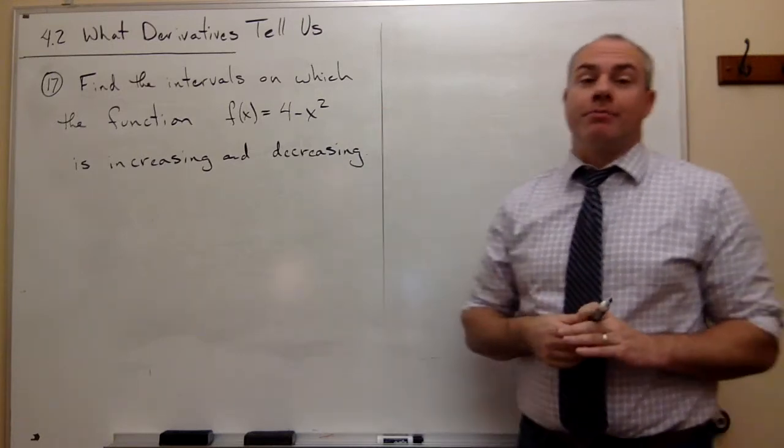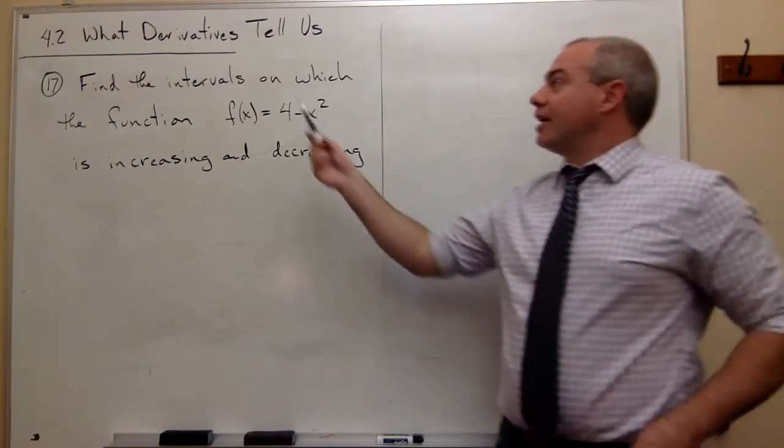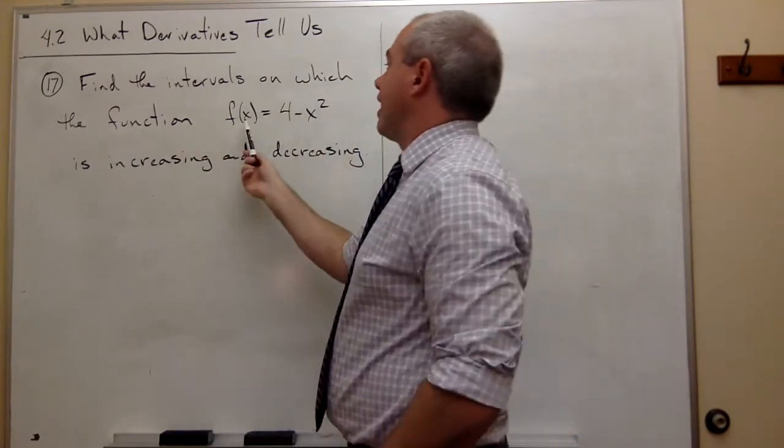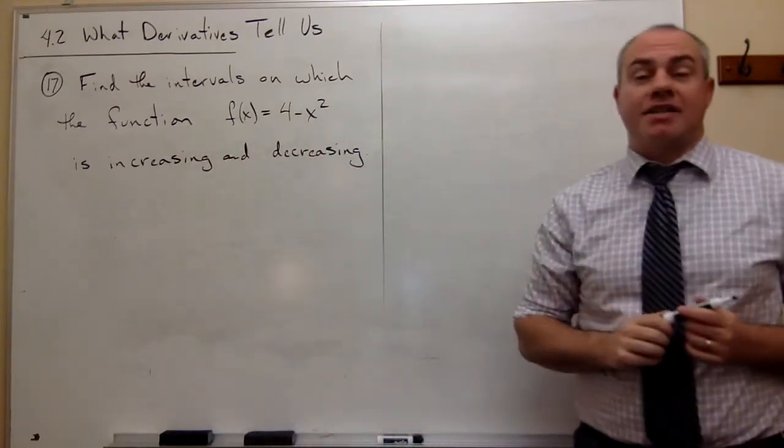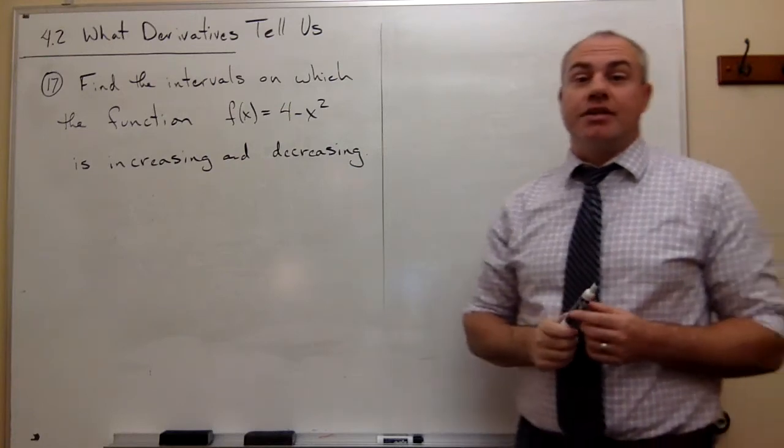In this specific problem, problem number 17, we'd like to find the intervals on which the function f(x) = 4 - x² is increasing and decreasing.